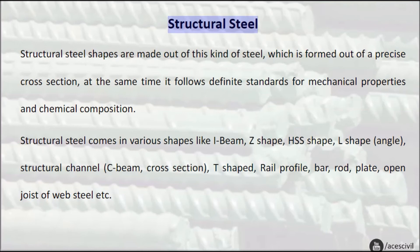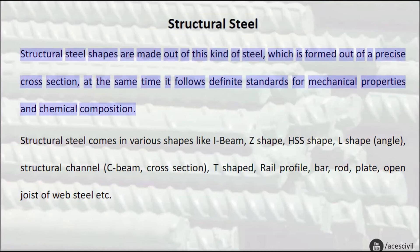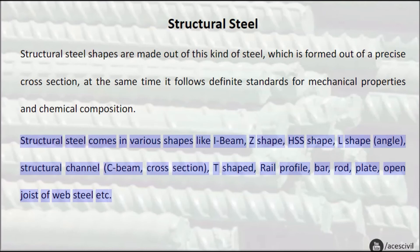Structural steel shapes are made out of this kind of steel, which is formed out of a precise cross section, at the same time following definite standards for mechanical properties and chemical composition. Structural steel comes in various shapes like i-beam, j-shape, h-s-s shape, l-shape, angle, structural channel, c-beam, cross section, t-shaped, rail profile, bar, rod, plate, and open joist of web steel etc.